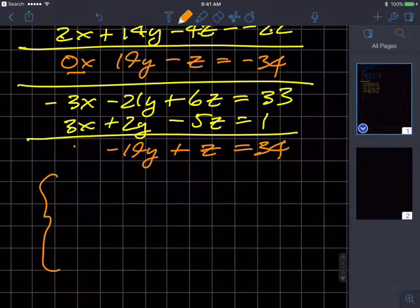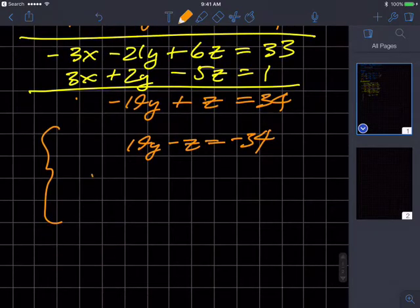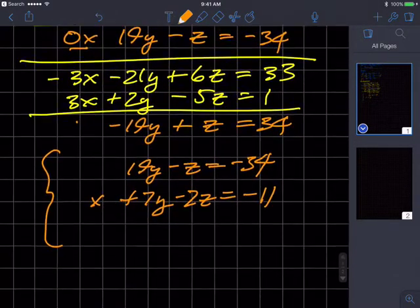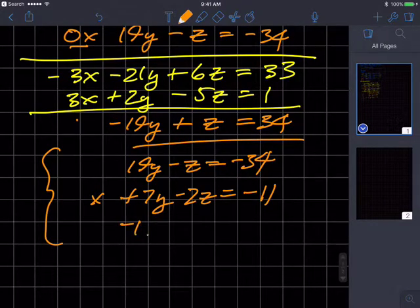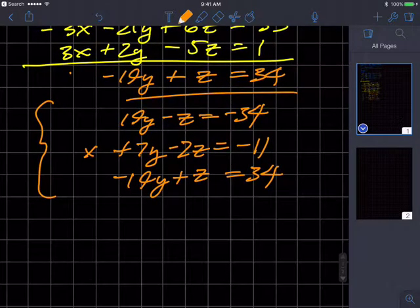So my system now with those changes is 19y minus z equals negative 34. And the middle one is still x plus 7y minus 2z equals negative 11. And then the last equation is this guy, which is negative 19y plus z equals 34. And you may have noticed something regarding the first and last equation. They're essentially the negation of each other.